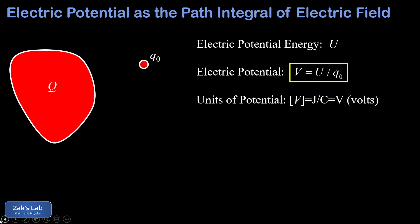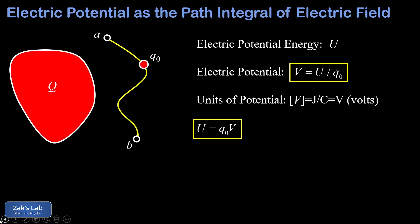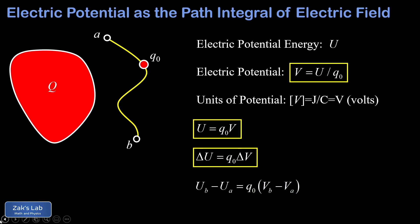We can turn around the definition of potential and write that for a given test charge q0, the potential energy is equal to the charge multiplied by the potential at that location, or q0 times V. This also means that as a charge moves from point A to point B, the change in potential energy delta U is equal to q0 times the change in potential delta V. We can expand those deltas to write U_B minus U_A equals q0 times the quantity V_B minus V_A. Delta V gets a special name — that's called the potential difference between the two points A and B.